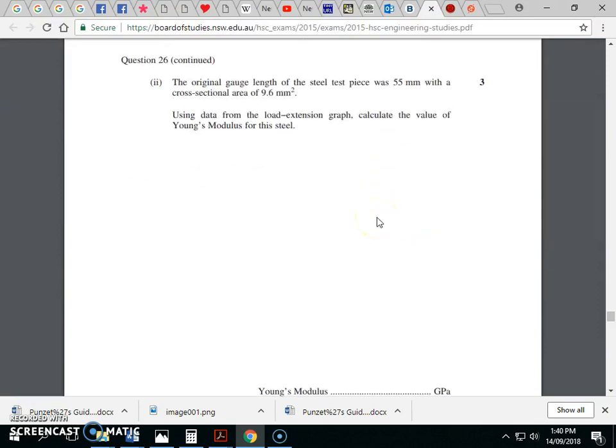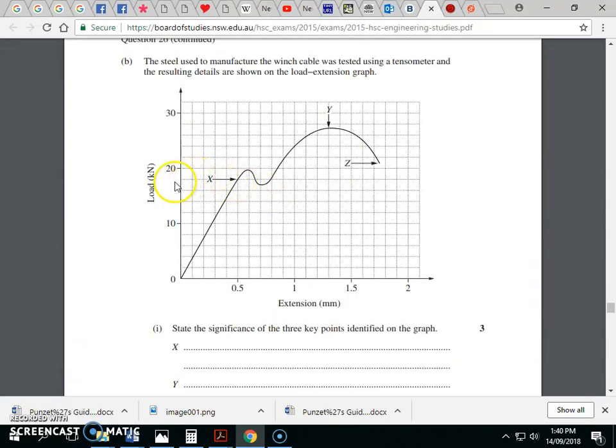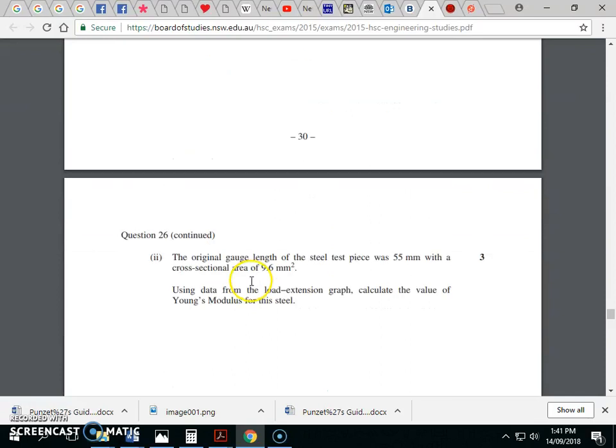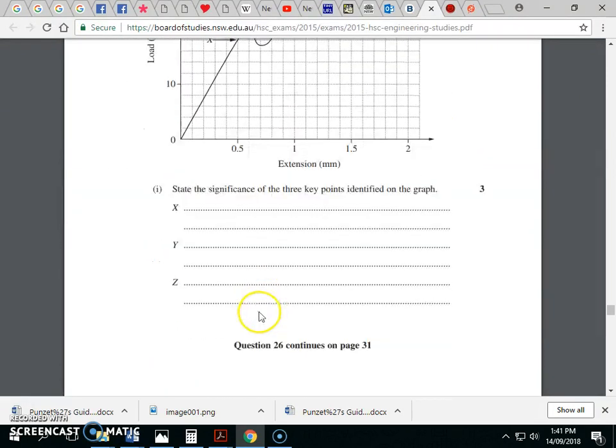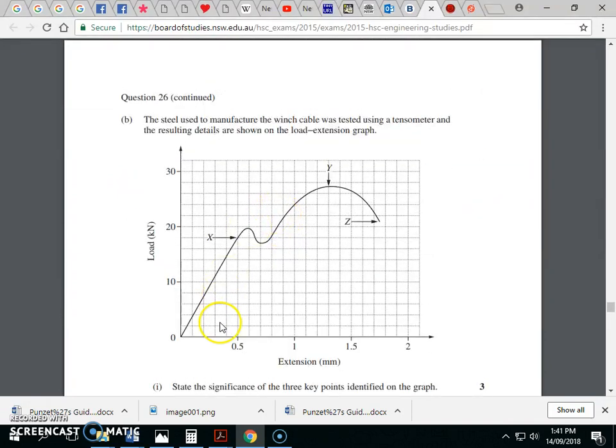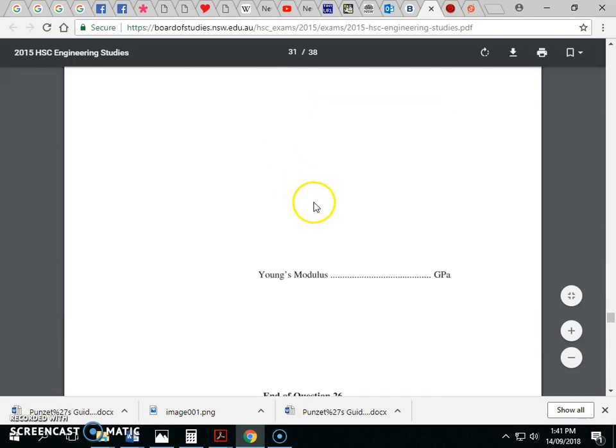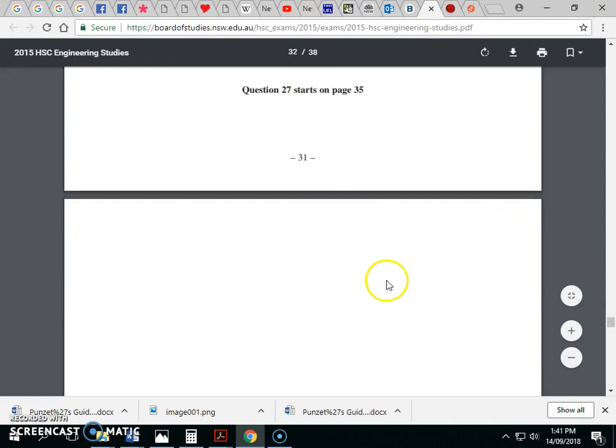This is an E equals FL/A question. We're finding the Young's modulus E equals F. Using the data from the stress-strain graph. For a stress-strain graph, we're going to use our force, what's that, 18? We're going to use 18 kilonewtons and our extension is 0.5 millimeters. So it's F, which is 18 kilonewtons, so 18,000 times L, which is 55 millimeters divided by E, which is 0.05 millimeters times 9.6 millimeters squared. We're happy with that because all our units were in millimeters. So that means our answer is going to be in megapascals. We want an answer in gigapascals, so we divide by thousands, because answers are typically given in gigapascals.